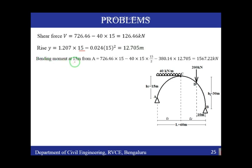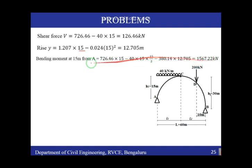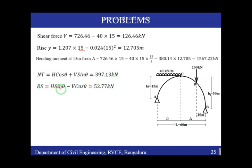The bending moment at 15 m from A is: 726.46 × 15 − 40 × 15 × (15/2) − 380.14 × 12.705 = 1567.22 kN·m. Normal thrust N = H·cos θ + V·sin θ = 397.13 kN. Radial shear Q = V·cos θ − H·sin θ = 52.77 kN.